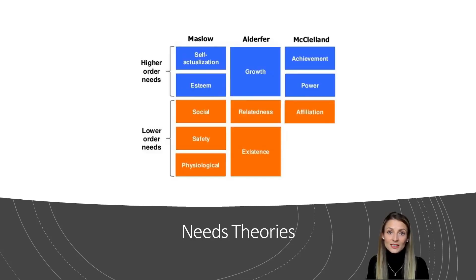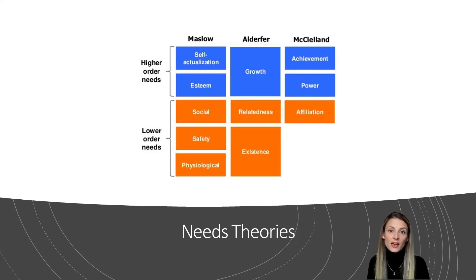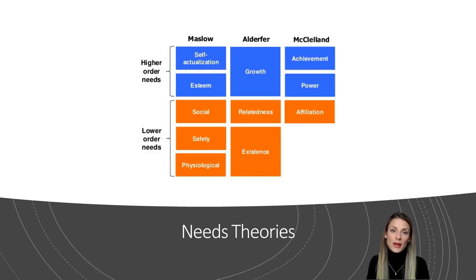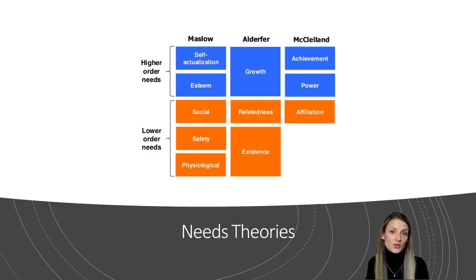What kinds of needs matter to the learning process? In this graphic, we can see three different theories and a total of 11 different needs that they highlight. Any one theory isn't necessarily better than the others. The important point is that there are many different needs to think about, and everyone varies in the needs motivating them in any given situation.